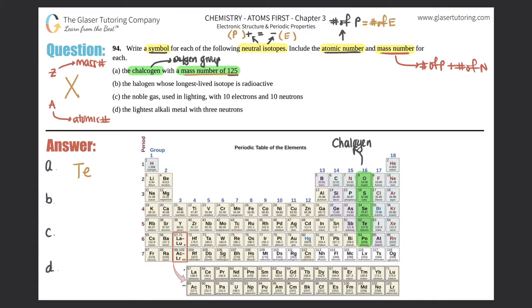For part a, it's Te. They want the atomic number and the mass number. We have to go by the mass number that they gave us of 125—that goes on the top. We can't use the 127 because that's not what they gave us, but we can use the atomic number. The atomic number will never change for a given element, so the 52 will still go on the bottom.